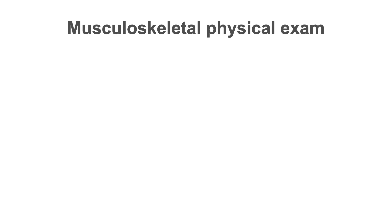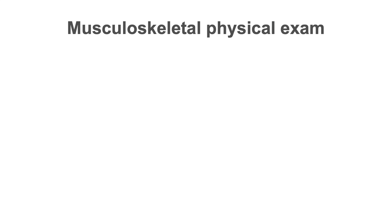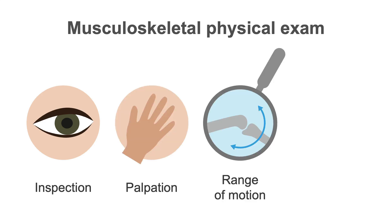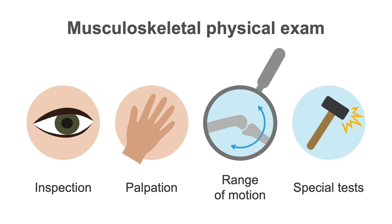The components of a musculoskeletal physical examination include inspection, palpation, evaluation of range of motion, and special tests. In this lesson, you will learn about the first three, and we will cover special physical examination tests that can help diagnose several different types of arthritis and periarticular pathologies in a future lesson.